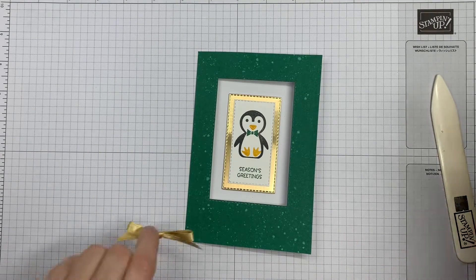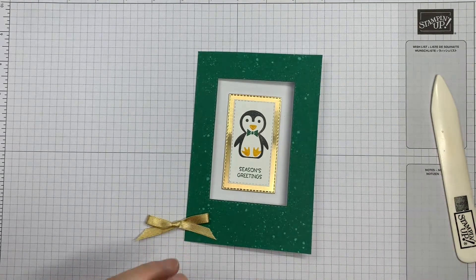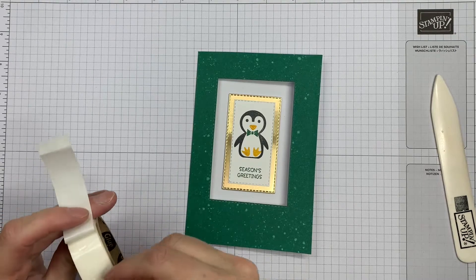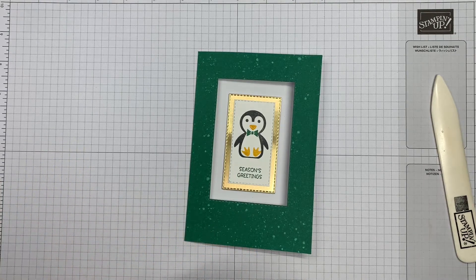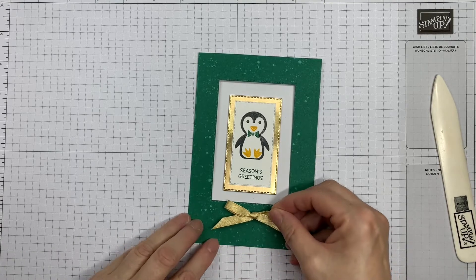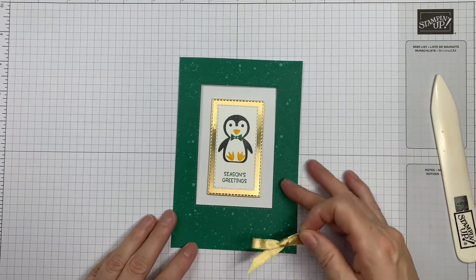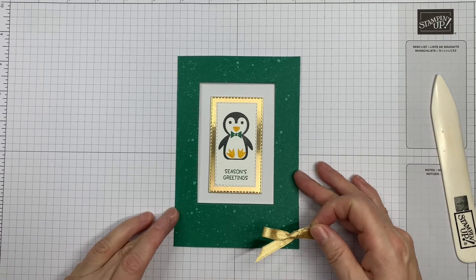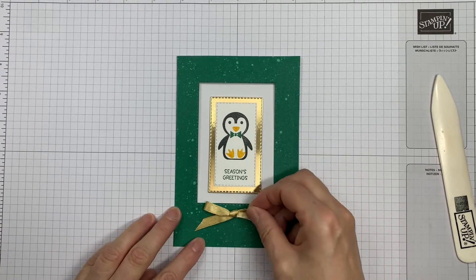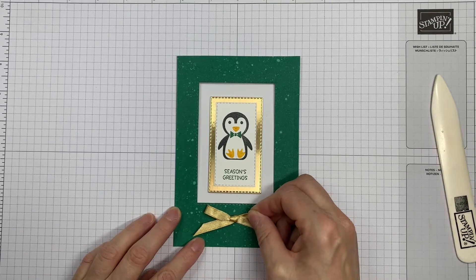And then I'm just going to add, to finish this, a little gold bow. And this really does take up the pre-printed card. I'll just get that central on my grid paper so that I can see where my bow wants to go.